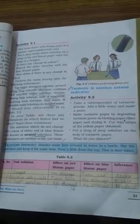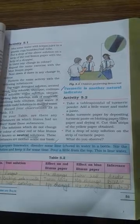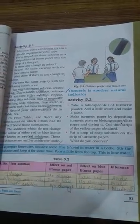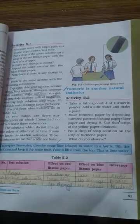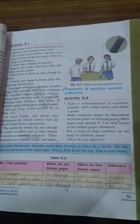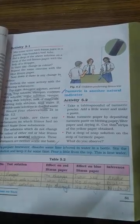Today what we are going to read about is activity 5.2 that turmeric is another natural indicator. You must be knowing what is natural indicator, the indicators which we get from nature. So today we are going to do an activity. First we will read from the chapter then we will do the activity.